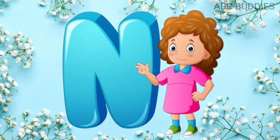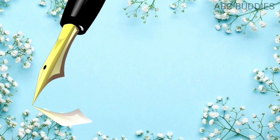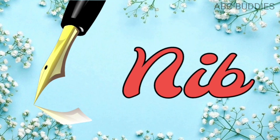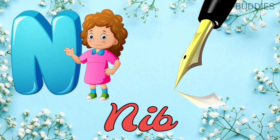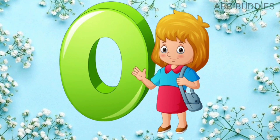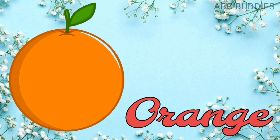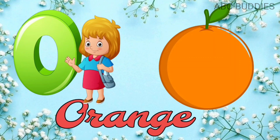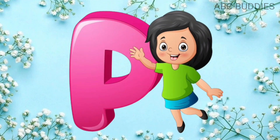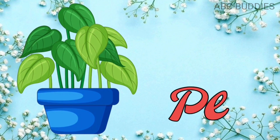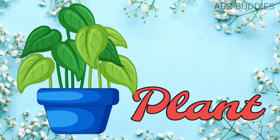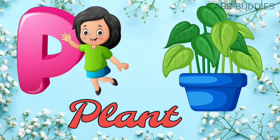N. N is for nib. N-I-B. Nib. N for nib. O. O is for orange. O-R-A-N-G-E. Orange. O for orange. P. P is for plant. P-L-A-N-T. Plant. P for plant.